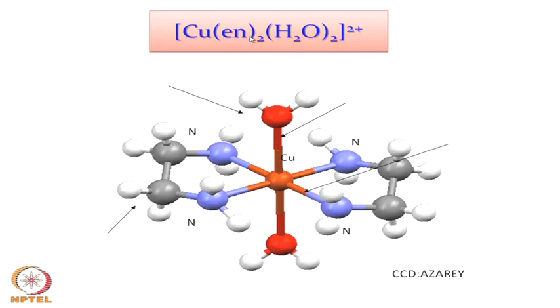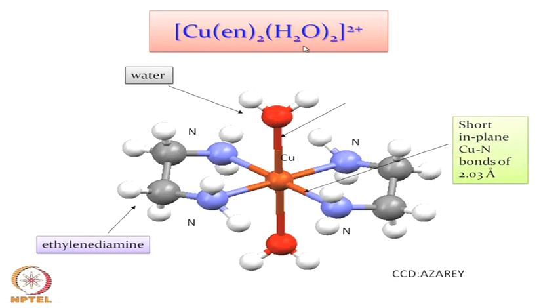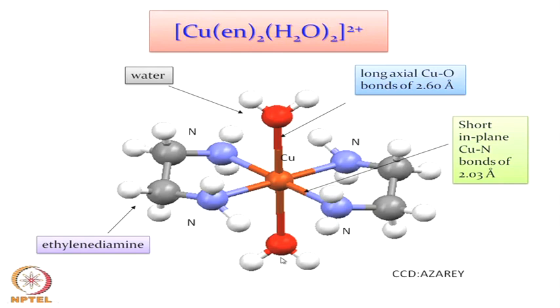For bidentate ligands, consider the bis(ethylenediamine)copper diaqua molecule. The long axial Cu–O bonds (also seen in the hexaaqua molecule) are around 260 pm (2.60 Å). The short in-plane Cu–N bonds are in the range of 2.03 Å — shorter in-plane Cu–N bonds and longer distances along the elongated axial direction.